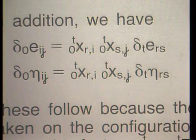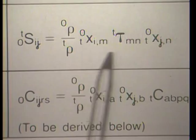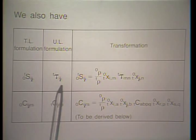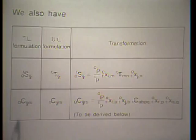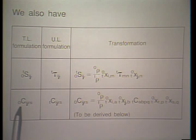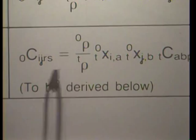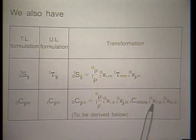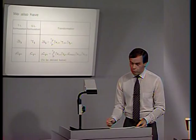In addition, we have the important relationship between the second Piola-Kirchhoff stress and the Cauchy stress, introduced in an earlier lecture. We also have a relationship between the tangent material tensor corresponding to the total Lagrangian formulation and corresponding to the updated Lagrangian formulation—noting 0 for the TL and t for the UL. That relationship is given by a fourth-order tensor transformation, which I'd like to discuss further, as it is important.